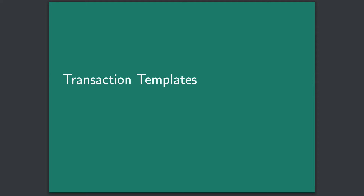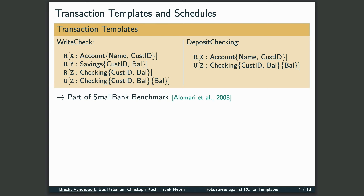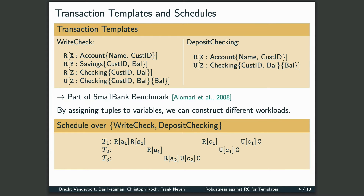A transaction template is essentially a sequence of operations over typed variables. As an example, you can see two transaction templates based on the SmallBank benchmark, which models a banking application. Looking at the Deposit Checking template on the right, the first operation is a read operation on the account relation accessing the name and customer ID attributes. The second operation is an atomic update, which first reads the Customer ID and Balance attributes of a checking account, after which the balance is overwritten by a new value. By assigning database tuples to these variables, we can construct all kinds of different workloads. In the schedule below, for example, the workload consists of three transactions: T1 is based on the Write Check template, and both T2 and T3 are based on the Deposit Checking template. T1 and T2 operate over the same account, but T3 operates over a different account.